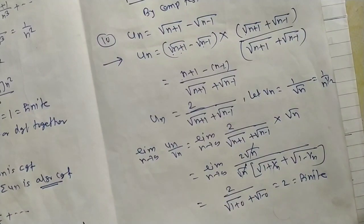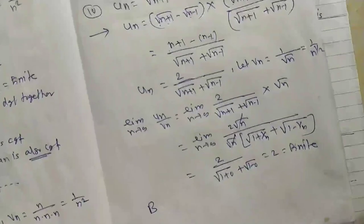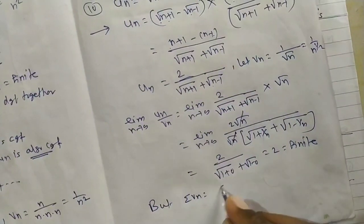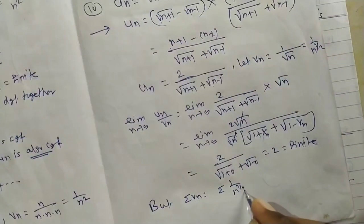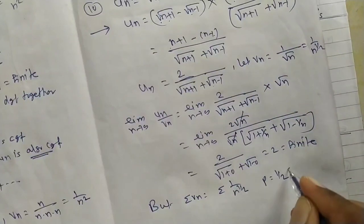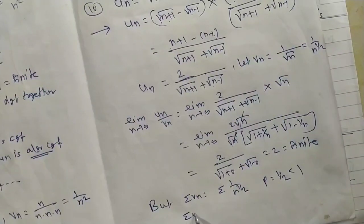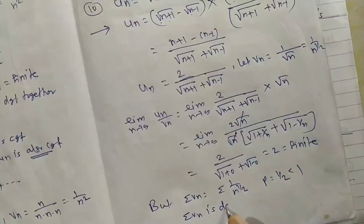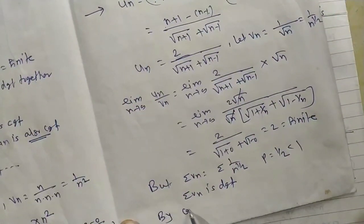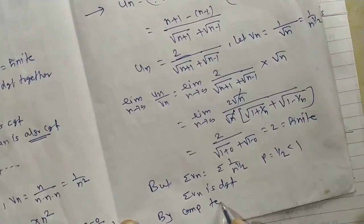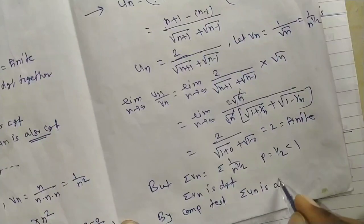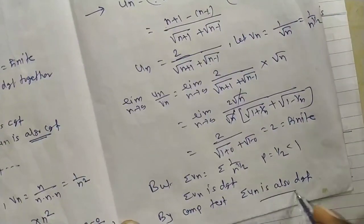Since the limit is finite, series Σun and Σvn are convergent or divergent together. But Σvn = Σ(1/n^(1/2)), so here p = 1/2, which is less than 1. Therefore by the p-series test, Σvn is divergent, and hence by comparison test, series Σun is also divergent.